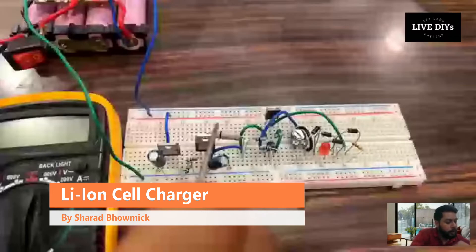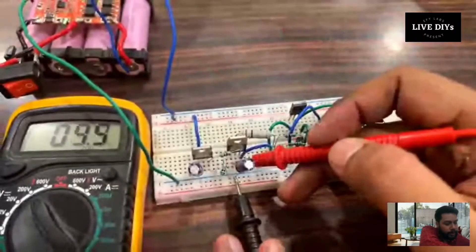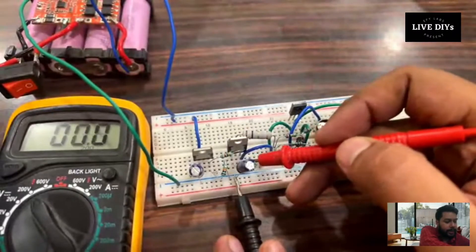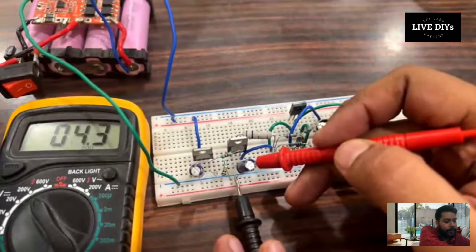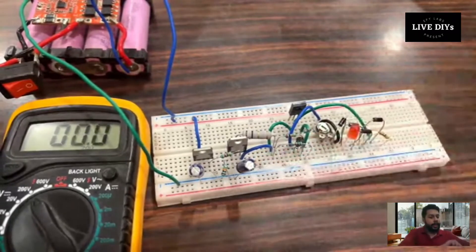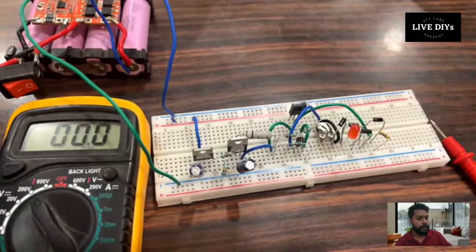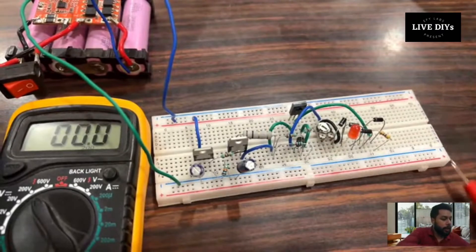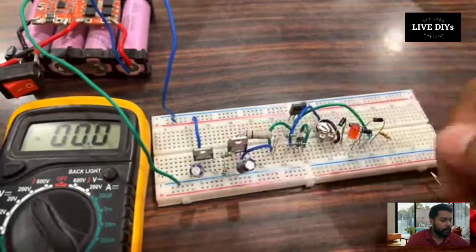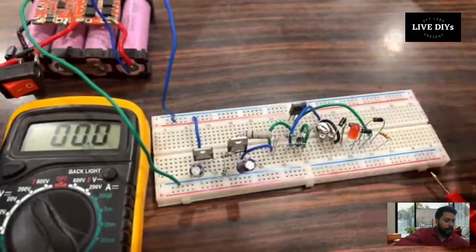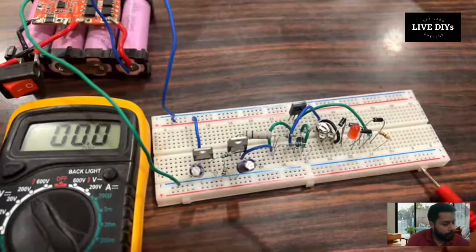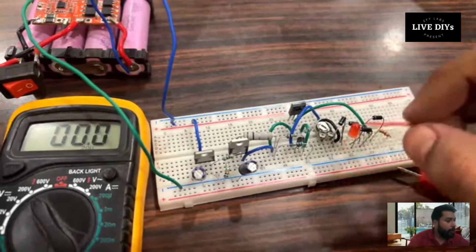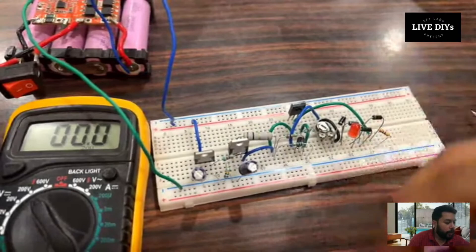Now you know that this voltage regulator is decreasing the voltage to something around 4.2-4.3 volts. There's a loose connection in this capacitor. Now it has exceeded 4.4-4.5 volts. I think there is some loose connection, but as you can see the voltage regulator is working fine.